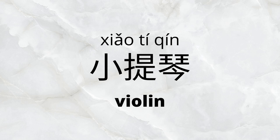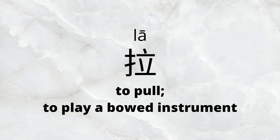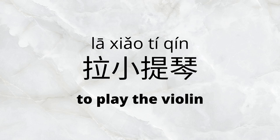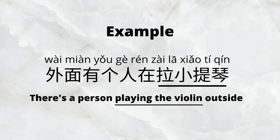小提琴 means violin, and the verb we'll use is 拉, which means to pull or to play a bowed instrument. So 拉小提琴 means to play the violin. We would use 拉 for a violin or any other instrument played with a bow. Our example is 外面有个人在拉小提琴.